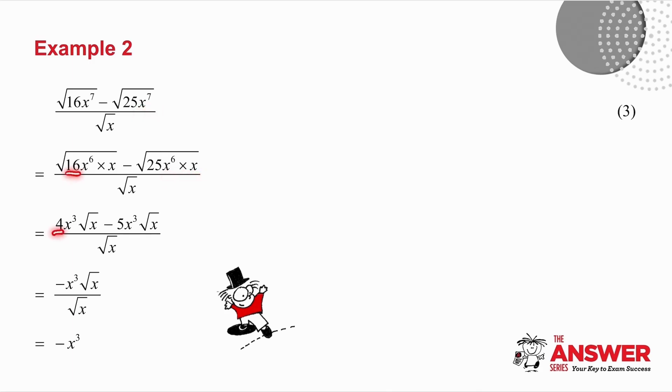The square root of 16 is 4. The square root of x to the 6 is x cubed. And I'm left with root x. Square root of 25 is 5. Square root of x to the 6 is x cubed. And again, I'm left with root x. Now, these terms on the top are like terms. I've got 4 of these x cubed root x minus 5 of the same x cubed root x. 4 minus 5 is minus 1 of those x cubed root x terms. The root x's cancel, and I'm left just with minus x cubed.